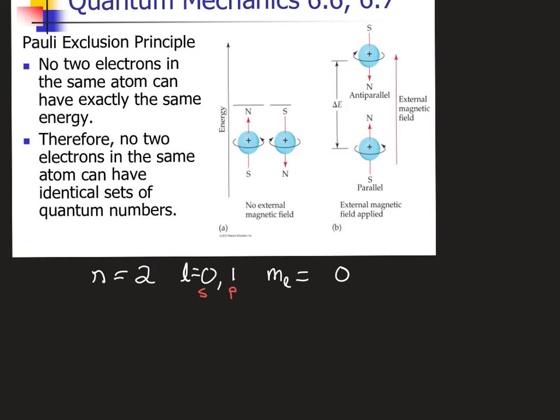The M sub L when L equals 1 is negative 1, 0, plus 1—three orientations in space. Each orientation can hold two electrons. If we look on our periodic tables, we will see that the P block on our periodic table is 6 elements wide. It is not a coincidence.